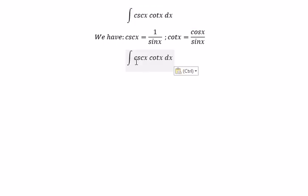About cosecant of x, we change for 1 over sine x. Cotangent x, we change for cosine x over sine x.